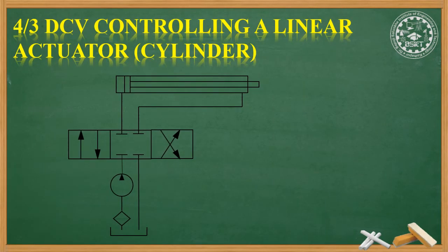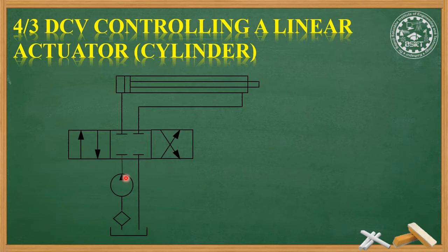Now let's look at a simple hydraulic circuit. This is a hydraulic circuit — we know it is hydraulic because all the triangles in the symbols, such as the triangle inside the pump and other component triangles, are solid (filled). If those triangles were hollow (unfilled), it would become a pneumatic circuit. This is a basic hydraulic circuit using a 4x3 direction control valve as one of its components.